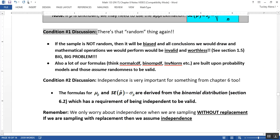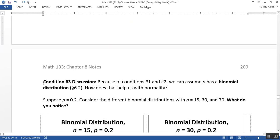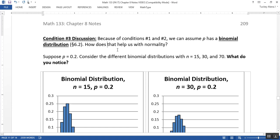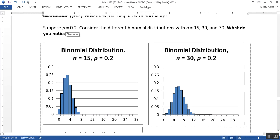We've considered condition one and two, so now let's look at condition three. Condition three is the n must be large enough discussion. Because of conditions one and two, we assume we have the binomial distribution. Let's look at the binomial distribution again and normality.